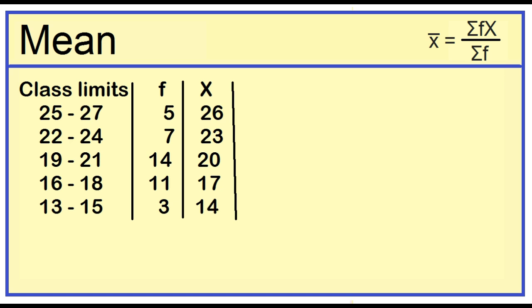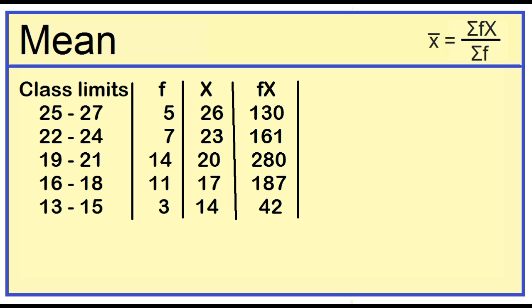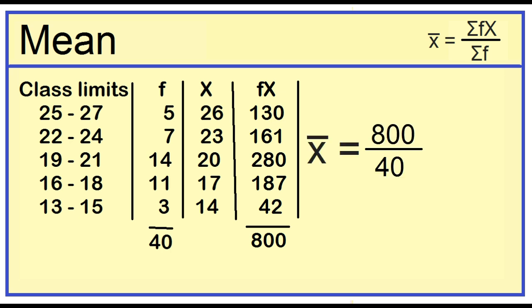Let's add another column for the product of the frequency and the class mark. 5 times 26 is 130, 7 times 23 is 161, 14 times 20 is 280, 11 times 17 is 187, 3 times 14 is 42. The sum is 130 plus 161 plus 280 plus 187 plus 42, which equals 800. The total frequency is 5 plus 7 plus 14 plus 11 plus 3, which equals 40. Divide 800 by 40 — the mean is 20.